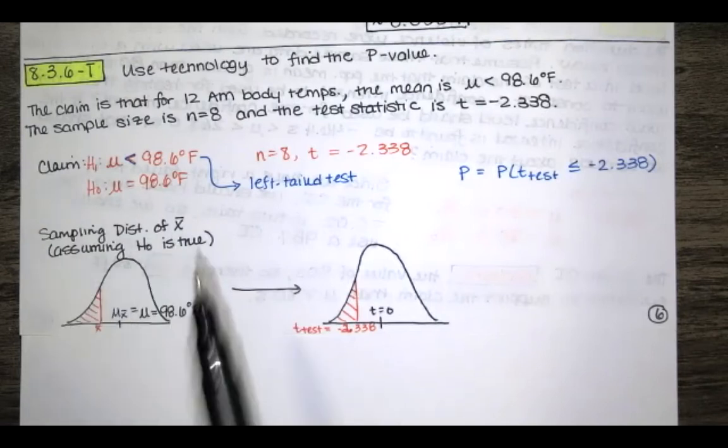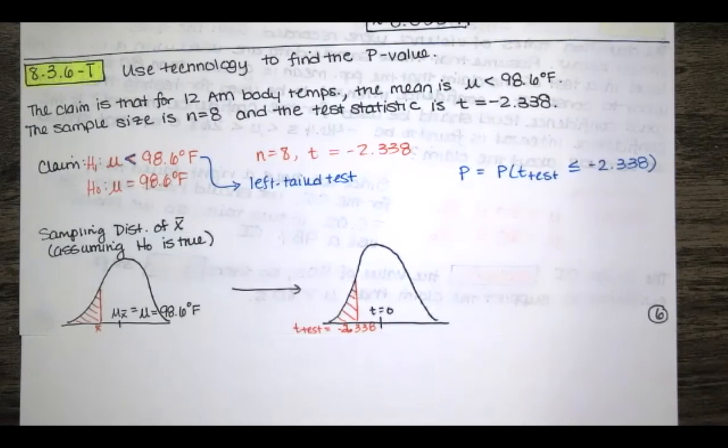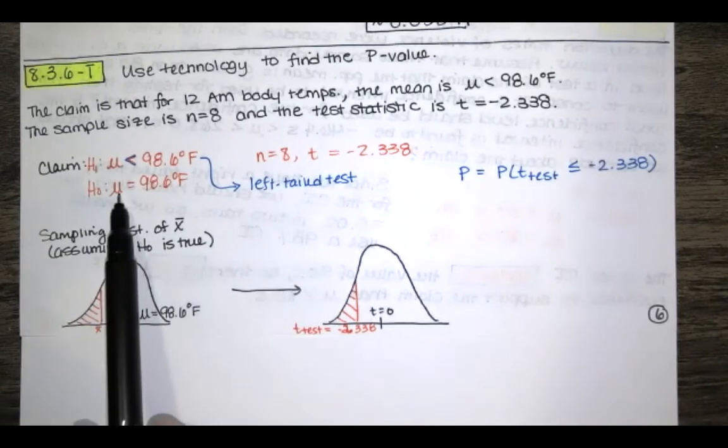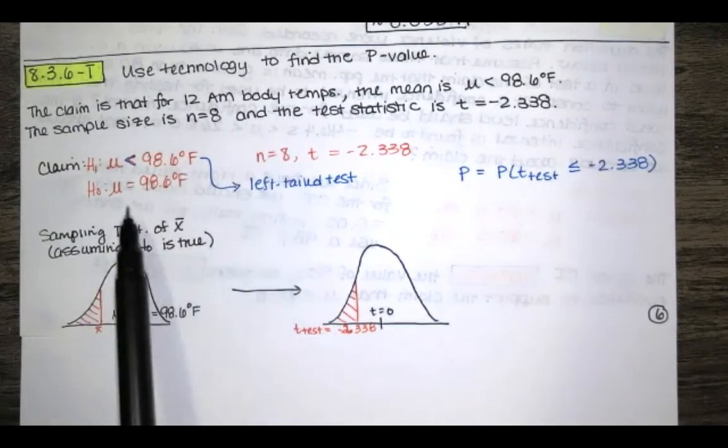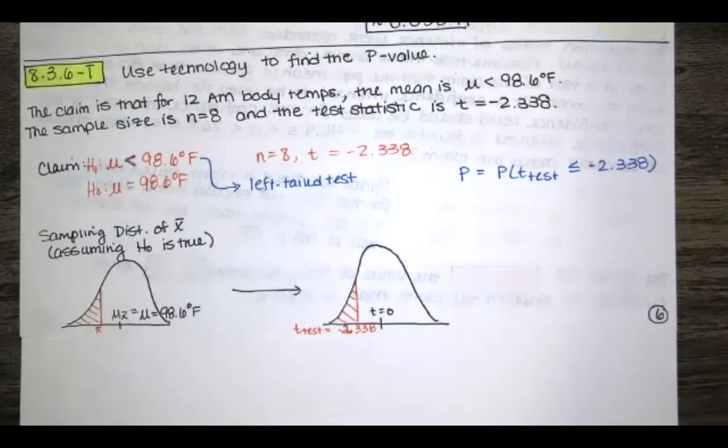So we're thinking about the sampling distribution of the sample means, and this distribution is drawn assuming that the null hypothesis is true. So we're assuming that those 12 a.m. body temperatures have a mean equal to 98.6 degrees Fahrenheit. And then we're saying to ourselves, for the given x-bar or for the x-bar that we calculated from our sample, we've got a sample and we have its mean, is that significantly high or significantly low given that the null hypothesis is true?